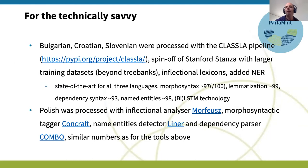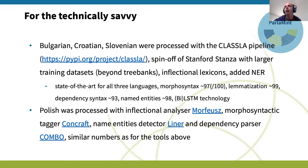I will give a few technical details on how we did the processing for the more technically savvy people. We processed the South Slavic languages — Bulgarian, Croatian, and Slovenian — with one pipeline developed inside the CLARIN knowledge center, which focuses on South Slavic languages. This is actually a spin-off of the Stanford Stanza tool, and we improved the results by extending the training data.